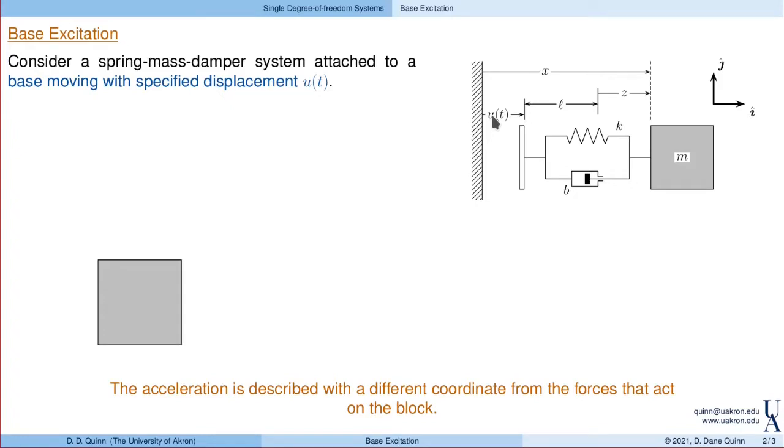Now, I'm going to go through the modeling fairly quickly, and in particular, I'll give you the coordinates - the directions I and J. Z will describe the relative displacement across this spring and damper. The forces in the spring and damper will be dependent on Z. X will describe the position of the block with respect to the ground, and u(t) is the displacement of the base.